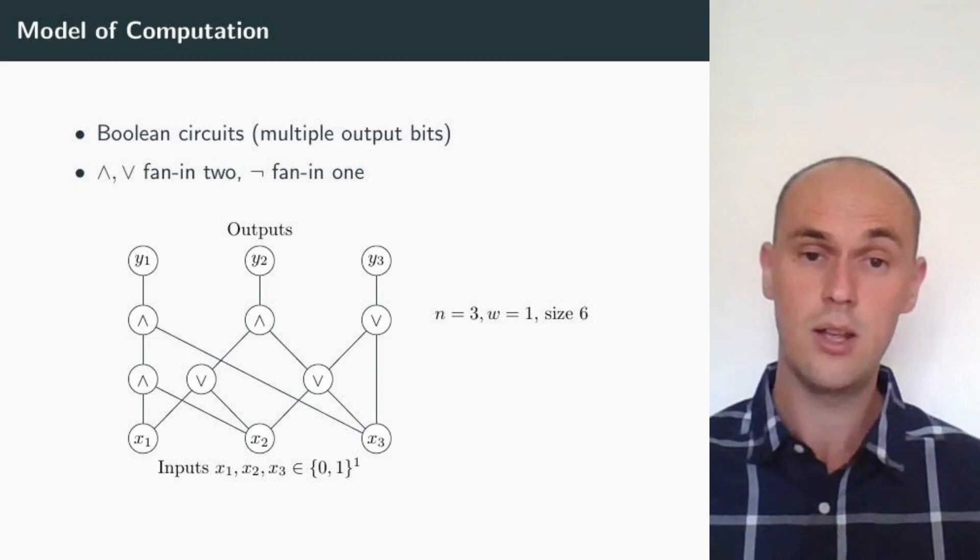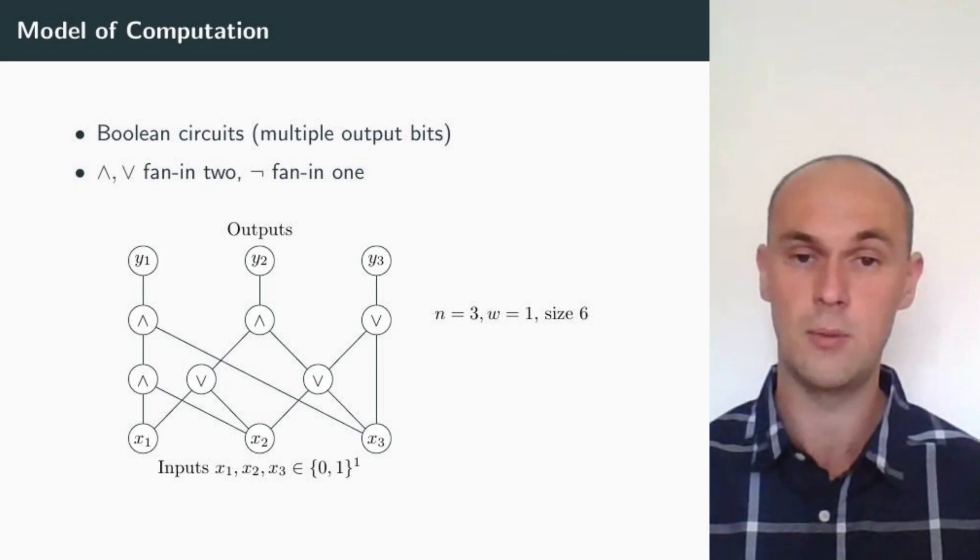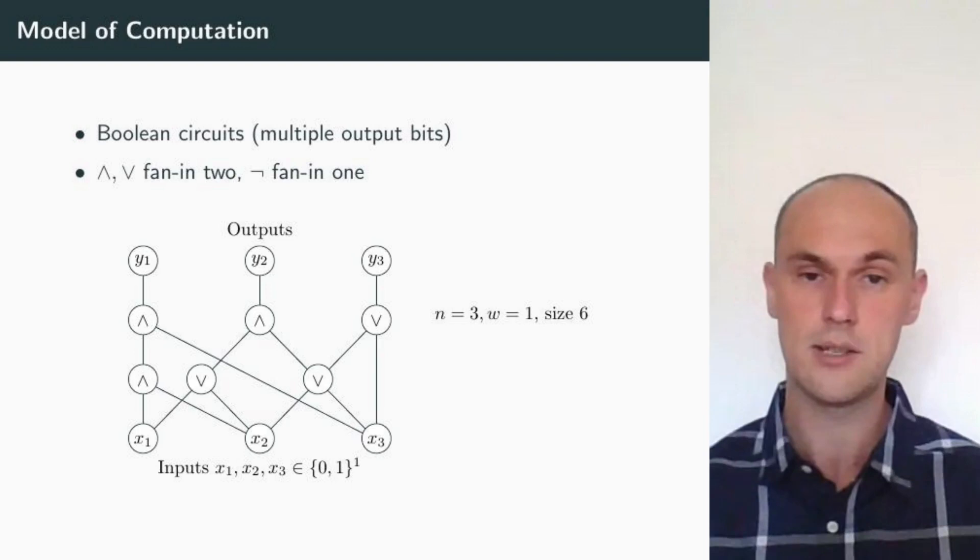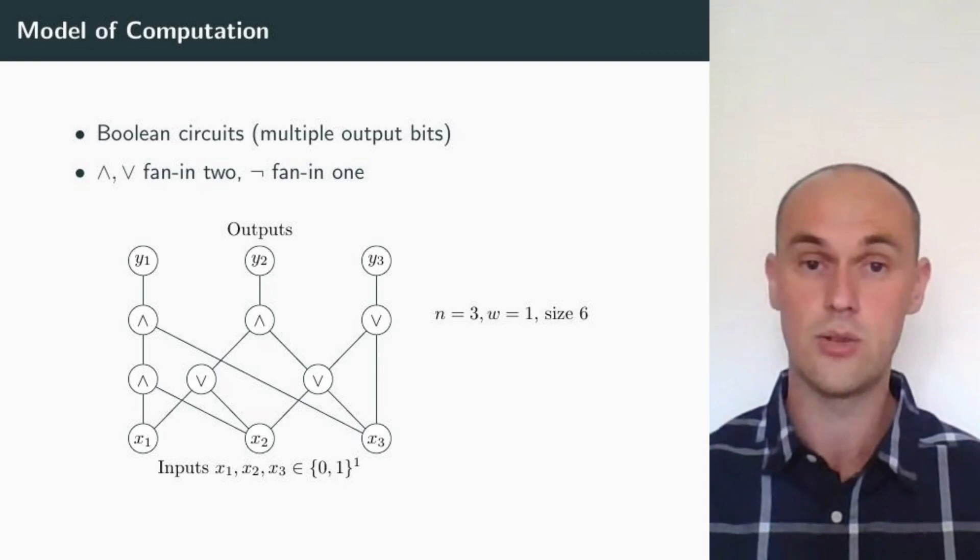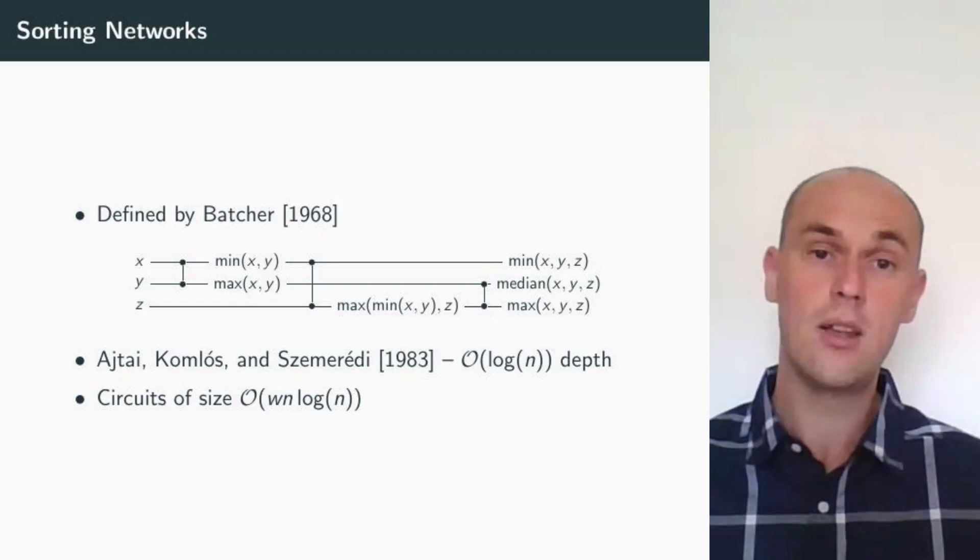In our simple example figure, we have three inputs at the bottom, x1, x2 and x3. That means n is equal to 3. Each input is represented by a single bit in binary, and we are using 6 Boolean gates to sort them. That means the size of the circuit is 6. Also note that the depth of the circuit is 2.